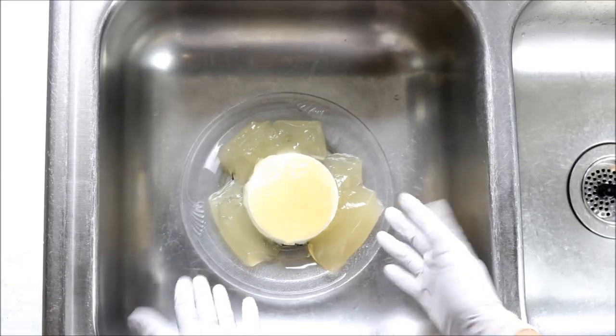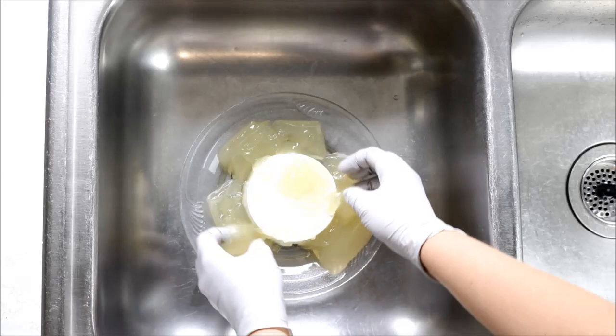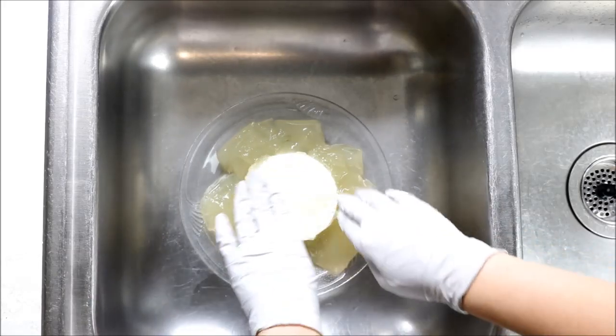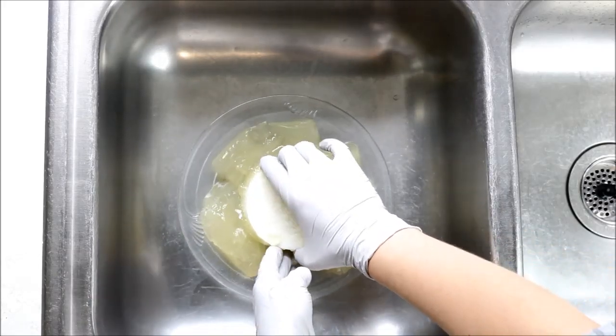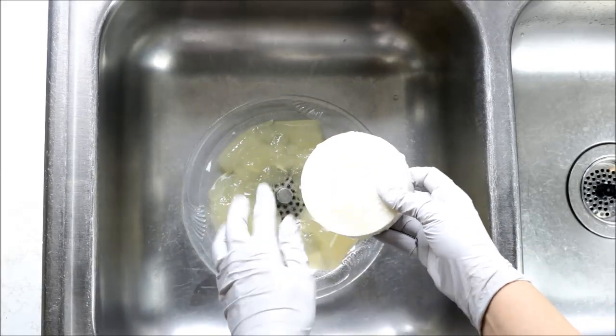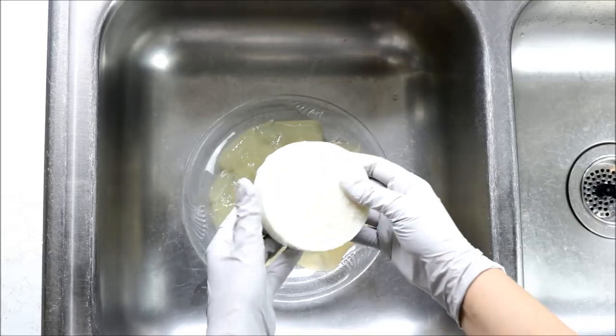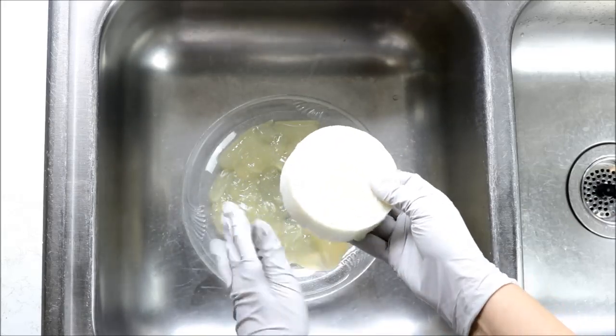There's kind of this gelatin blob on there and what I want to do is I just want to pull that off because I'm gonna throw that away. And then I'm just gonna rinse this piece of fat that's solid right now. I'm gonna rinse that in cold water, paper towel dry it off, and then I'll wrap it up in saran wrap and refrigerate it.